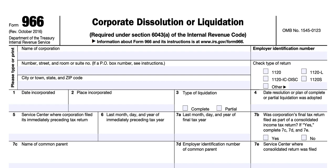Exempt organizations should see the instructions for Form 990, return of organization exempt from income tax, or Form 990-PF, return of private foundation or section 4947A1 trust treated as private foundation. Subchapter S subsidiaries should see Form 8869, qualified subchapter S subsidiary election. Do not file Form 966 for a deemed liquidation, such as a section 338 election or an election to be treated as a disregarded entity under Treasury Regulations section 301.7701-3.